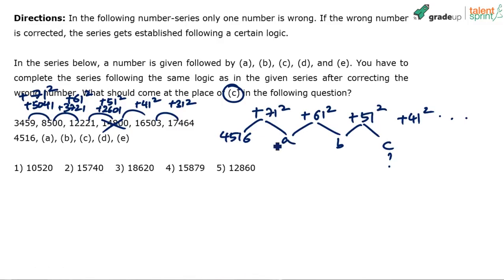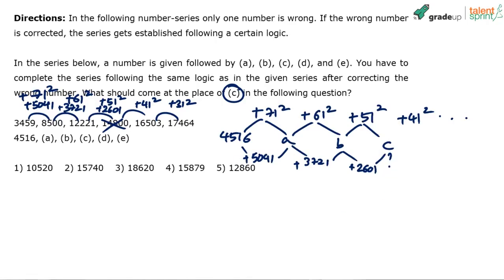You have to add 5,041 to get a, then add 3,721 to get b, then add 51 squared which is 2,601 to get c. Doing that calculation, you'll find that 15,879 — option four — is the answer. You can do the calculation yourself. The pattern is: plus 71 squared, plus 61 squared, plus 51 squared, and so on.